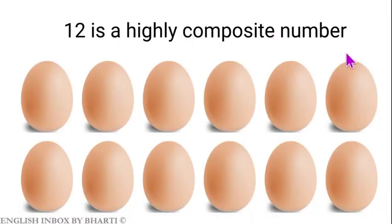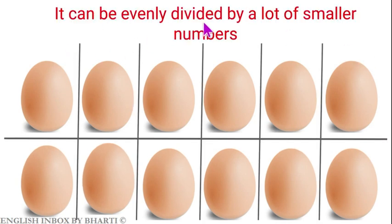12 is a highly composite number. 12 ek bohot sanyukt ank hai. It can be evenly divided by a lot of smaller numbers. 12 ko hum kai ankho dwara barabar bhago mein baat sakte hain. Jo bara ank hai, usse kai sare chote chote ankho dwara barabar bhago mein bata ja sakta hai.